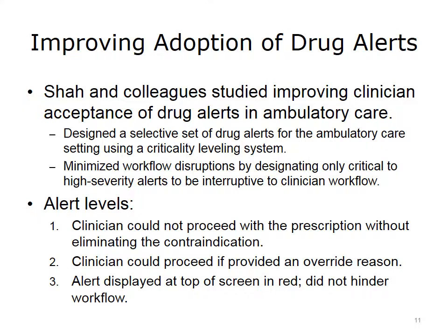Shaw and colleagues wanted to find a way to improve clinician acceptance of drug alerts in ambulatory care settings. They designed a selective set of drug alerts using a criticality leveling system. Level 1 alerts were the most critical, and a clinician could not proceed with the prescription without eliminating the contraindication. Level 2 alerts were very important, but the clinician could proceed if he or she provided a reason for overriding the alert. Level 3 alerts were designed to not disrupt workflow but to provide important information for the clinician to take into consideration. Shaw's team demonstrated that by designating only critical to high-severity alerts to be interruptive of clinician workflow, they minimized workflow disruptions and improved clinician acceptance of drug alerts.